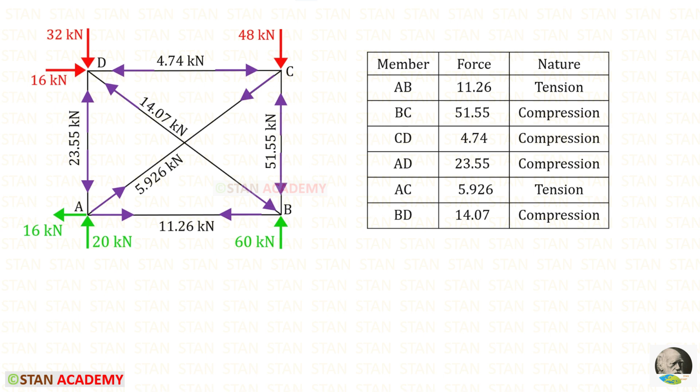Substituting FAC = 5.926 kN into each member force equation gives all member forces. In the truss, positive member force indicates tension and negative member force indicates compression.